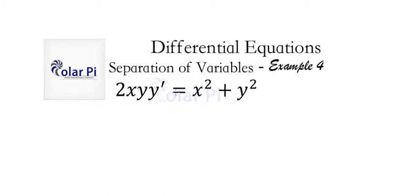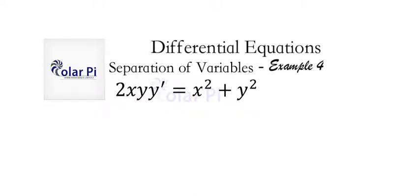I saved the best for last because this is definitely a significantly more difficult example than the previous three, and therefore a more fun example. To start, we're going to divide both sides of the given equation by 2xy. Doing so, we can write that y' equals x² plus y² divided by 2xy.